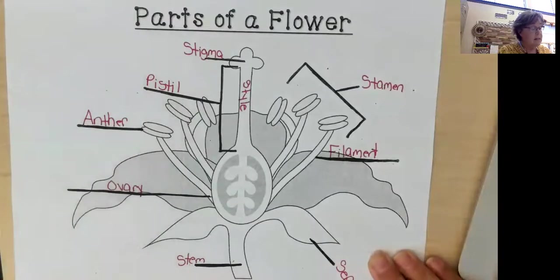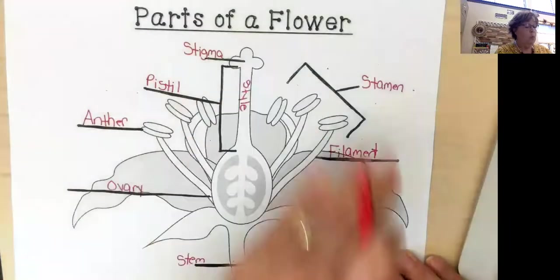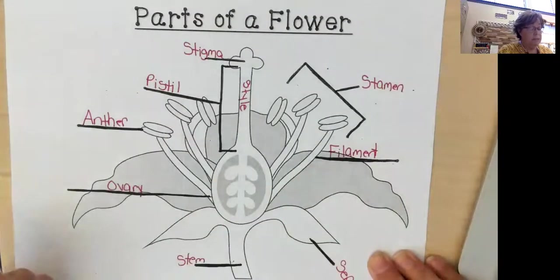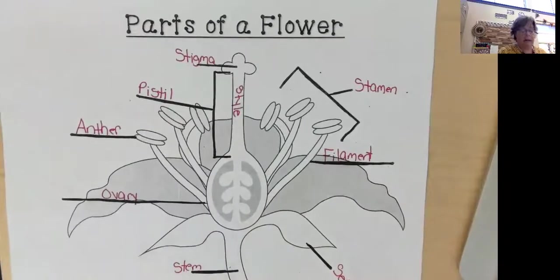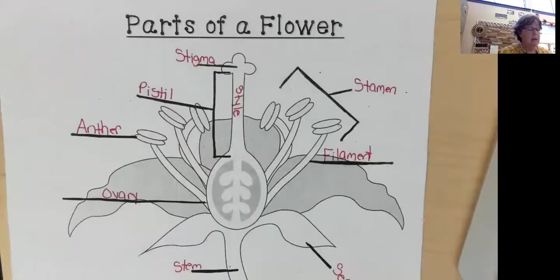And when you put all of this together, we have one flower, which is part of the plant. But now we've got it all divided so that we know our male and our female parts and how they work together to create new flowers.